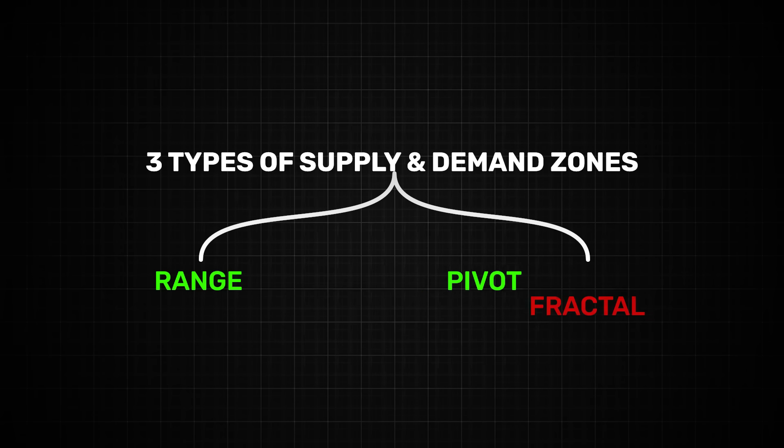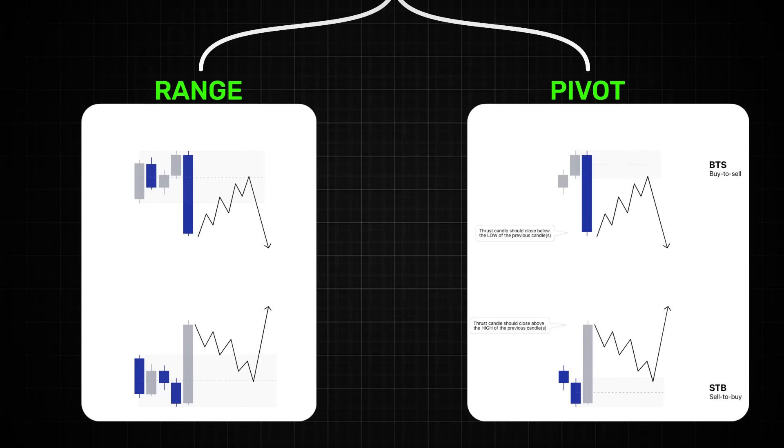The names are pretty self-explanatory. A range created zone is where price clearly initiates out of a range of candles. You draw the zone from the top to the bottom of the range. A pivot zone is where there is a pivot in price caused by only one or two candles. You can draw this from the single candle that is engulfed or you can include the second candle too depending on how refined you want to be.